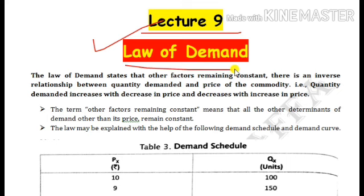The Law of Demand states that other things — other factors — remaining constant, there is an inverse relationship between quantity demanded and price of the commodity. 'Other factors remaining constant' کا مطلب ہے کہ جب باقی factors جو demand پر effect کرتے ہیں — like price of related goods, complementary and substitute goods, income of the consumer, number of buyers, future expectations, tastes and preferences — یہ سب constant رہیں۔